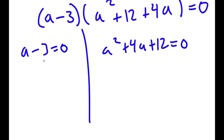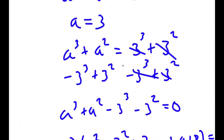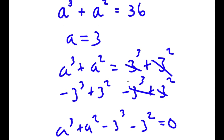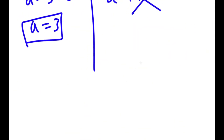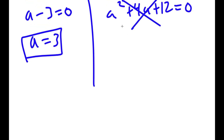For a minus 3 equals 0, a obviously equals 3, so this is one solution. For a squared plus 4a plus 12 equals 0, you need to use the quadratic formula. If you do, you get no real solution because you end up with the square root of a negative number. So a equals 3 is our only solution.